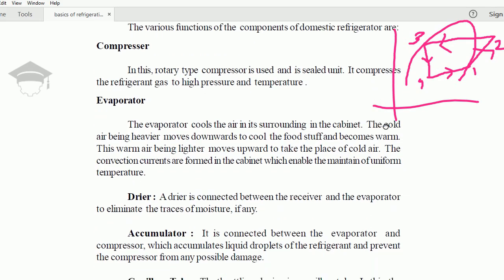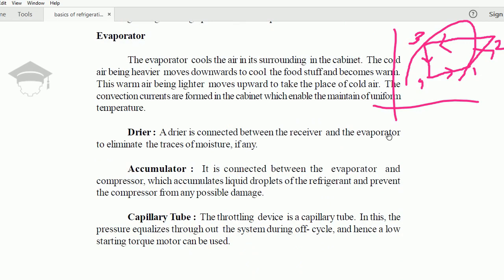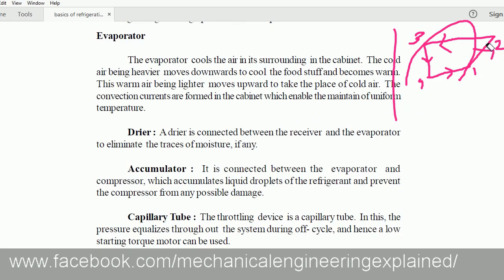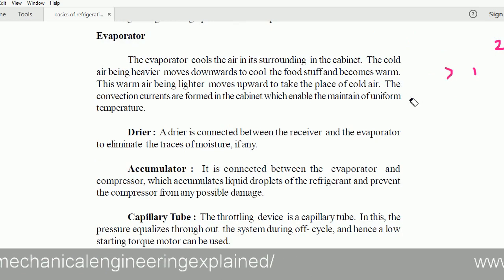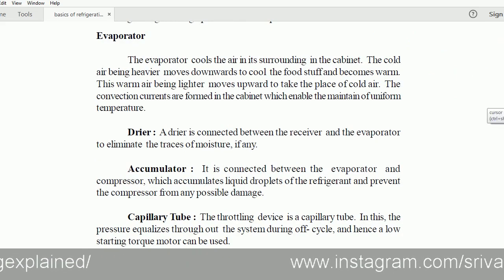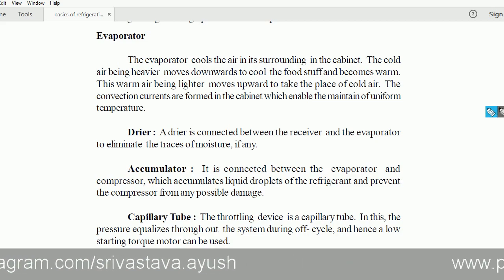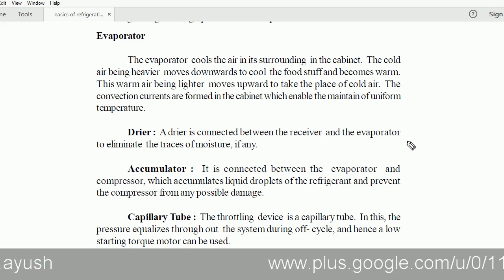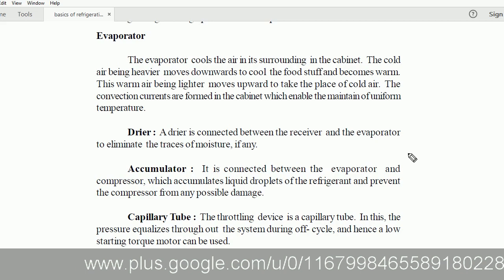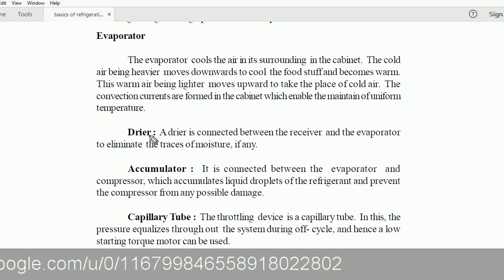Two other components are there: dryer and accumulator. The dryer, as the name suggests, is to capture any liquid droplet before it goes into the capillary tube, because it can clog the capillary tube and prevent the refrigerant from flowing. It is placed after the condenser, so it is called liquid line filter dryer.